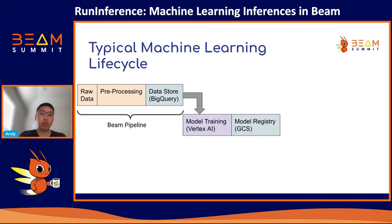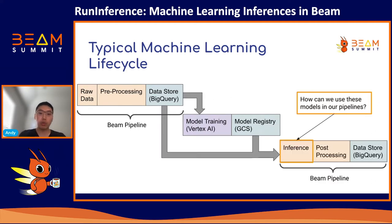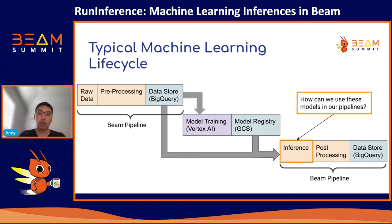With this data, you can then do your model training and validation. Once you have a tuned and trained model, you can store this model artifact into a model registry or object store like GCS. This leads us into the next big question, which is the topic I'll discuss today: how can we take data as well as a pre-trained model and then do production-level inference in batch or streaming pipelines?